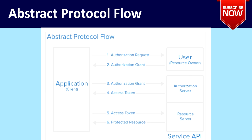This is the abstract protocol flow. The application client sends an authorization request to the user, and the user must authorize the application. Once authorization is granted, the client sends a request to the authorization server saying the authorization has been granted — give me the access token. The authorization server provides the access token to the client. After receiving the access token, the client sends it to the resource server. The resource server validates the access token, and once valid, sends the protected resources back to the client.